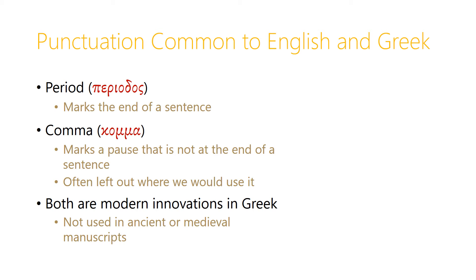Now, punctuation. There are several kinds of punctuation that are common to English and Greek. One is the period, which actually derives its name from the Greek term 'periodos', and this marks the end of a sentence in both English and Greek. There's also the comma — pronounced the same in Greek — which marks a pause that's not at the end of a sentence. Note that Greek often leaves out a comma where we would tend to use it in English. Both of these are modern innovations in Greek; they're not used in any ancient or medieval manuscripts and neither would have been used at the time of the New Testament's writing. Still, they appear in modern New Testament texts because they're familiar to us as English speakers and common in modern Greek punctuation.